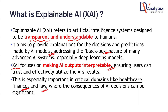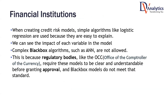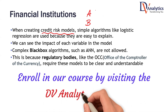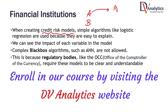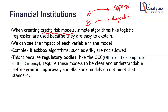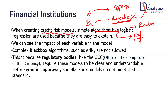Let me give you an example of financial systems. For example, we are building a credit risk model. Person A has applied for a loan, and person B has also applied for a loan. We approved person A's loan application but rejected person B's. You cannot simply reject a loan application — you are supposed to give a reason. The reason cannot just be that we have built a machine learning model and this model is predicting that there is a high chance you will be a defaulter.